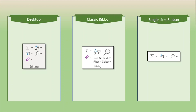The last group we're going to look at today is the editing group. It's an important group — it has the AutoSum button that not only lets you sum rows or columns, it has other very common functions like average and count. The desktop application has a fill button that works the same way that the fill handle does, allowing you to fill in sequences and patterns of formulas and numbers. But it does not exist within the classic ribbon view, and it doesn't seem to exist in the single line ribbon either.